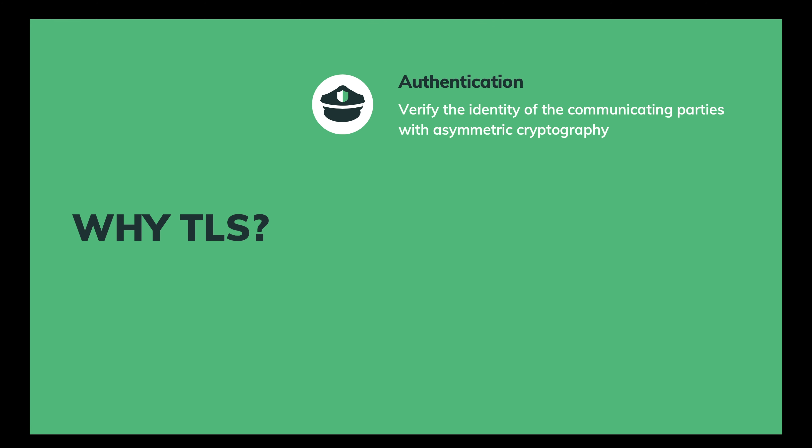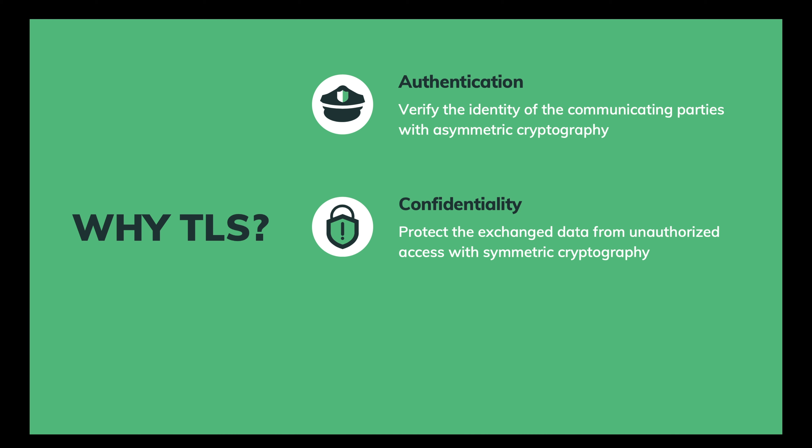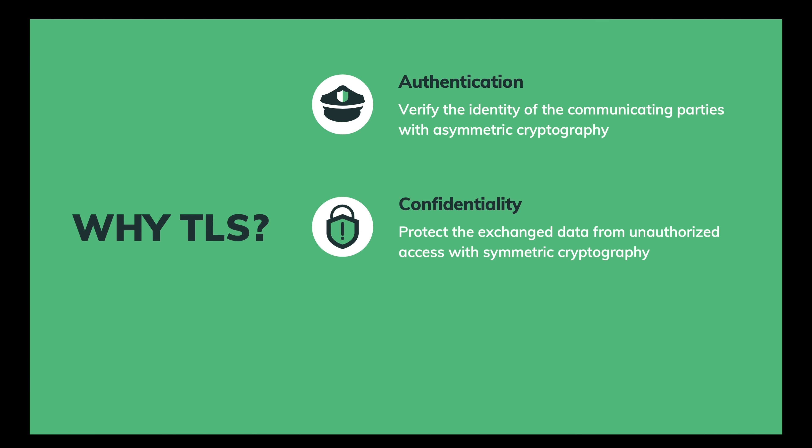But why do we need TLS? Why is it so important? Because TLS gives us three things. First, authentication — TLS verifies the identity of the communicating parties, normally client and server. With the help of asymmetric cryptography, TLS makes sure we go to an authentic website and not a fake one. Second, confidentiality — TLS protects exchanged data from unauthorized access by encrypting it with symmetric encryption algorithms. And third, integrity — TLS recognizes any alteration of data during transmission by checking the message authentication code.